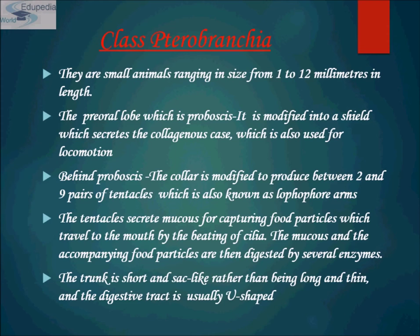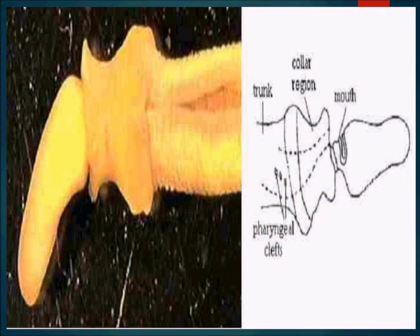The trunk is very short and sac-like rather than long and thin, and the digestive tract is usually U-shaped. The animal's anus is on the animal's back, approximately opposite to the mouth. As shown in the representation of Class Pterobranchia — with proboscis, collar region, trunk region, and anus — the trunk ends in a contractile, prehensile stalk, meaning it can grip like a monkey's tail, used for support in some species.